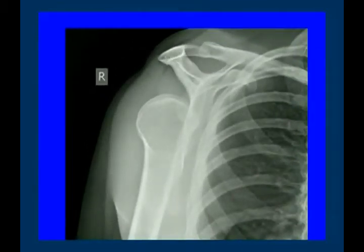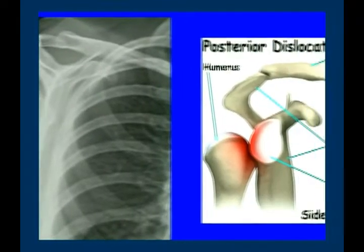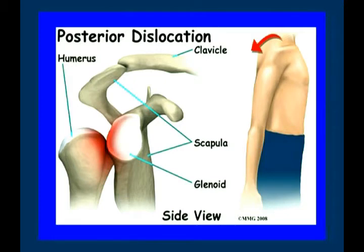Posterior dislocation is similar — the labrum or ligaments tear posteriorly. Much less common. Posterior dislocations are generally a phenomenon of falling on an outstretched arm with the elbow straight, or an axial load of a forward-flexed shoulder. We see posterior instability in contact sports — offensive linemen, hockey. If the elbow is bent, the force is dissipated in the arm; if the lever arm is made rigid, something tears in the back of the shoulder.